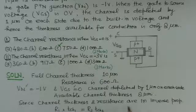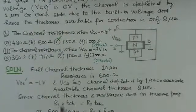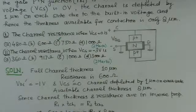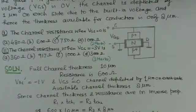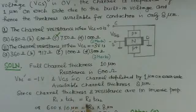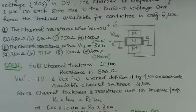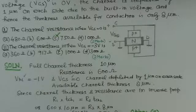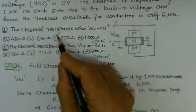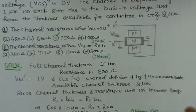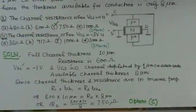The channel thickness and resistance are in inverse proportion. So we can write R1 × TCH1 = R2 × TCH2, meaning resistance times channel thickness should remain constant. Substituting: 600 ohms × 10 micrometers = R2 × 8 micrometers, which gives R2 = 750 ohms. So option C is the right choice for the first question.